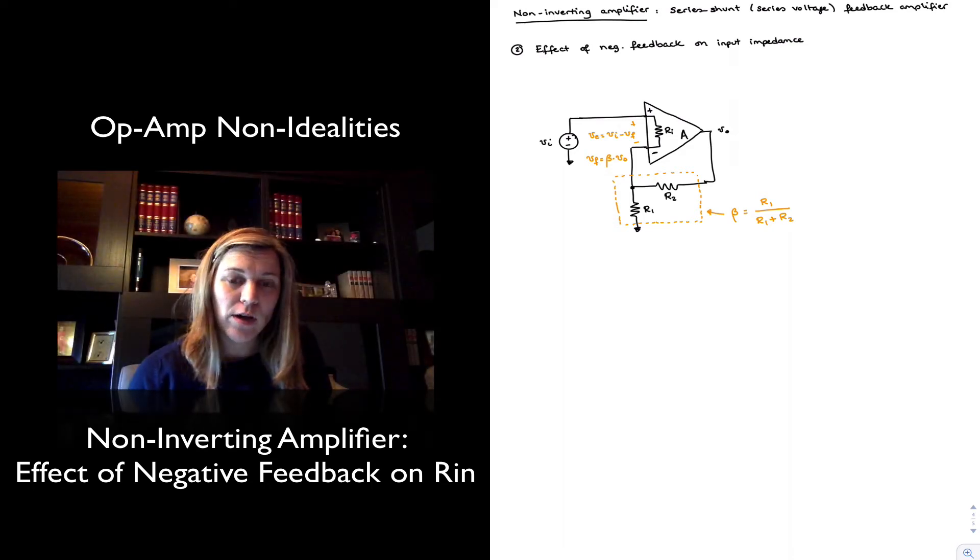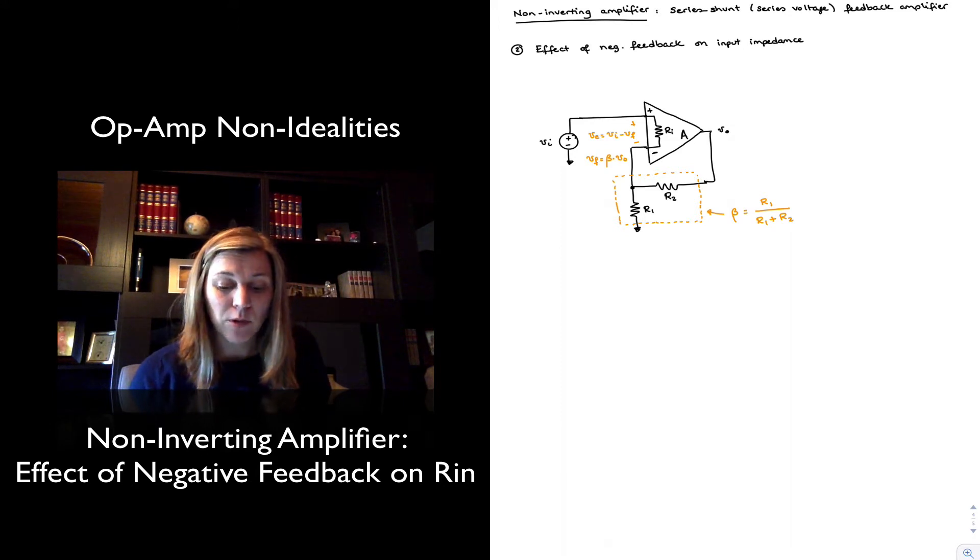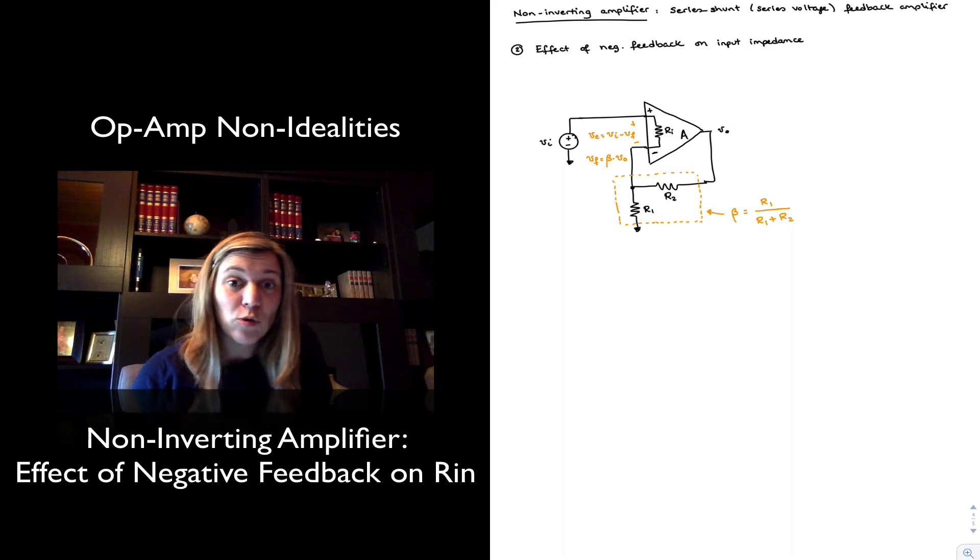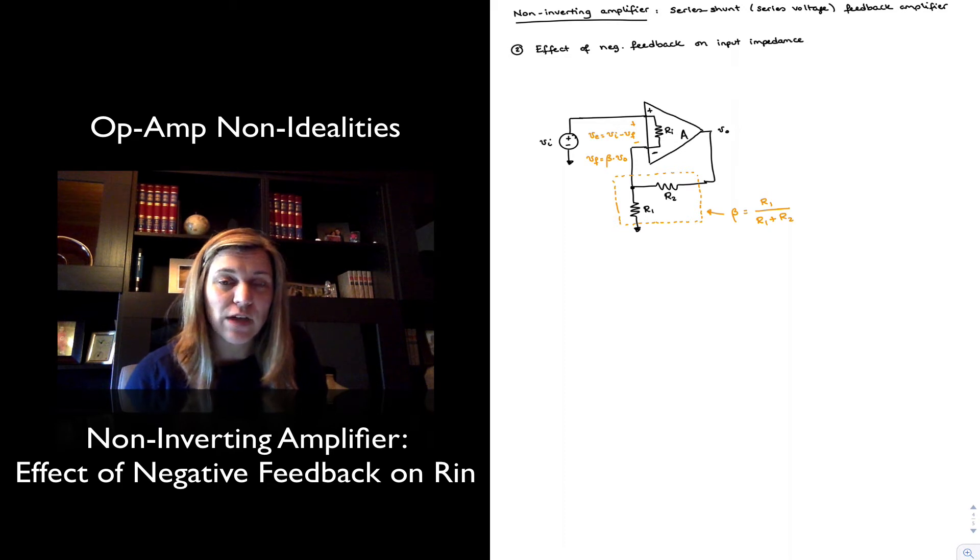So let's take a look now at the effect that negative feedback has on the input resistance of the circuit. In order to do that, I have modified slightly my model of the amplifier A to include the open loop input resistance, the input resistance of the amplifier before it is connected in feedback.